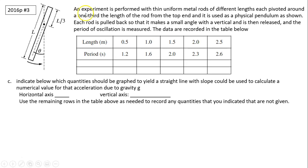Next part. An experiment is performed with thin, uniform metal rods of different length, each pivoted around one-third of the length of the rod from the top end, and it is used as a physical pendulum, as shown. Each rod is pulled back so that it makes small angle with a vertical and is then released. The period of oscillation is measured. The data are recorded in this data table. Part c indicates below which quantity should be graphed to yield a straight line with a slope that could be used to calculate the value of g. So let's see what is the relationship between period and length. We learned from last part.